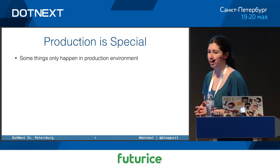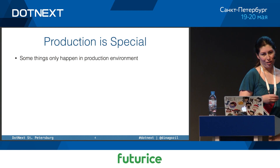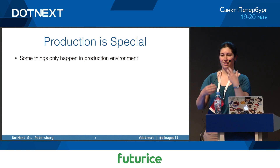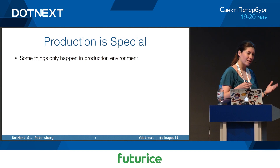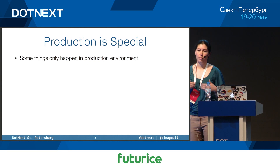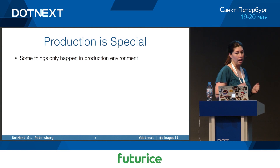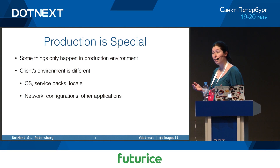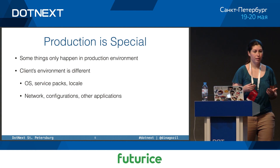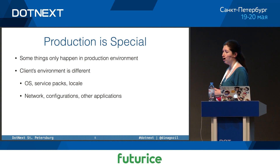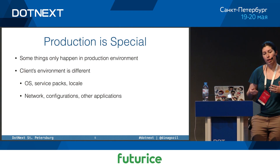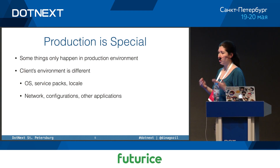We'll start with some motivation. Production is special. Ideally, we'd have a staging environment in which we could simulate production under the exact same conditions as in real life, but that is rarely the case. It's not because we don't test correctly or we don't invest enough time and resources into it, but simply because some things only happen in production. If you're developing a client-side application, then you can't control where your application is going to be installed. You don't know the exact operating system version, which service packs are going to be installed, what the locale is going to be, anything about any configurations.